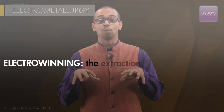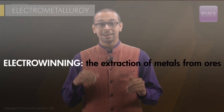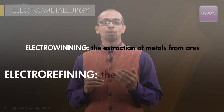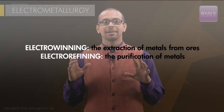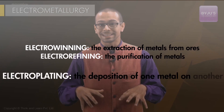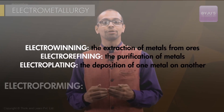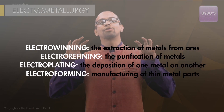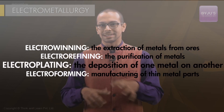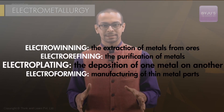There are essentially four categories of processes within Electro-Metallurgy: Electro-Winning, Electro-Refining, Electro-Plating, and Electro-Forming. Largely, these are all Electro-Plating processes at different scales.